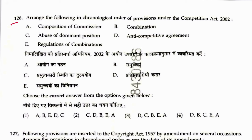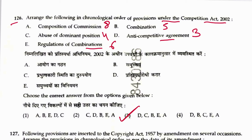Question 126: Arrange in chronological order provisions under the Competition Act. Anti-competitive agreements — Section 3. Abuse of dominant position — Section 4. Combinations — Section 5. Regulation of combinations — Section 6. Composition of commission — Section 8. Sequence is D, C, B, E, A. Answer is 3.